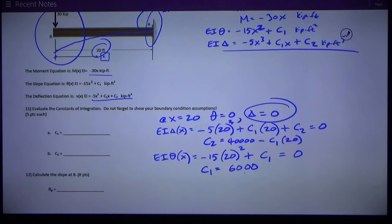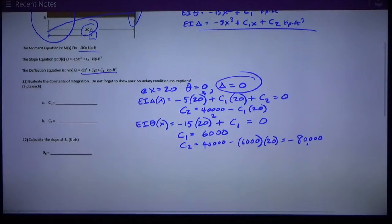Now, I always like to see if this answer makes sense, at least if the sign of it makes sense. And, oh, now I need to also solve for C2. Let's do that while we're at it. C2 is equal to 40,000 minus C1, which is 6,000, times 20. And C2 works out to be negative 80,000.